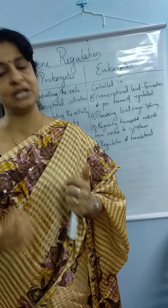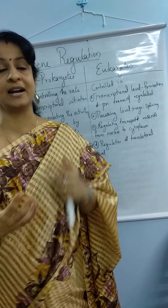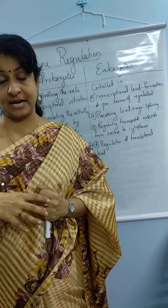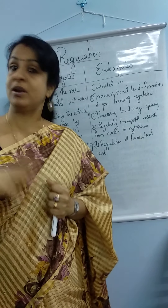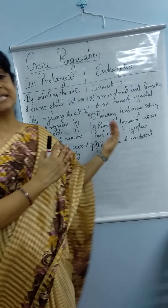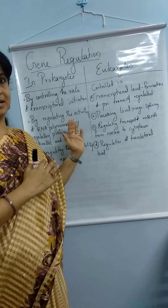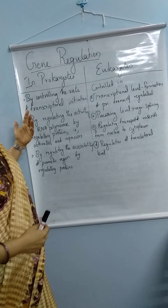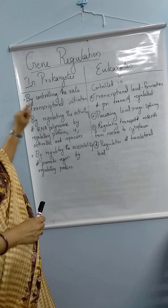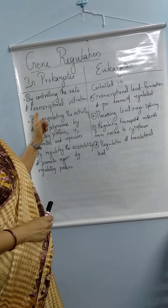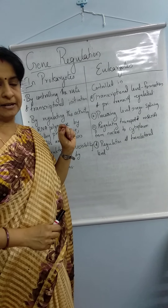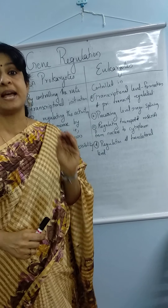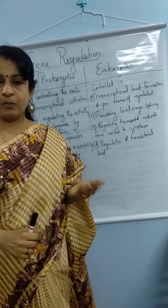So how is that regulated by our body or the cells? That is gene regulation — how the activity of genes are regulated to express or not to express. We will study this separately in prokaryotes and eukaryotes. In case of prokaryotes, the genes are regulated by controlling the rate of transcription.